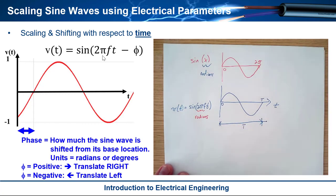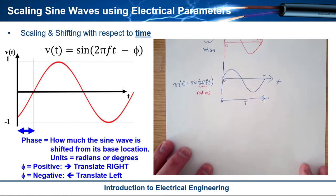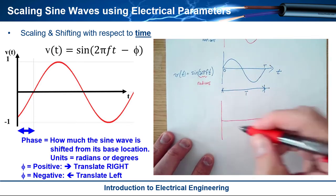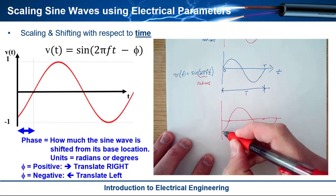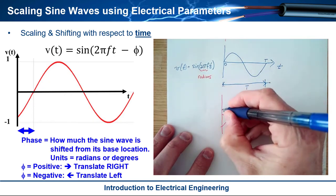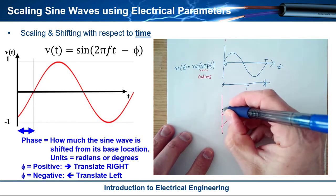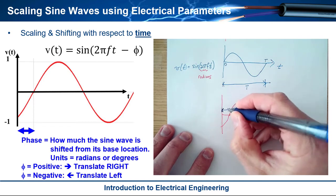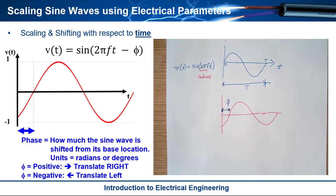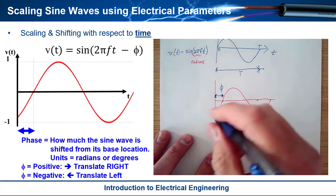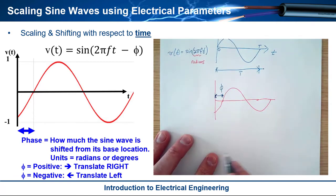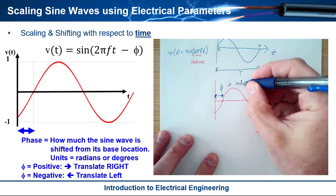Now we're talking about a phase shift, which is simply where you translate the sine wave left or right. Your sine wave might not cross at the origin — it might cross a little bit shifted to the right or left. This phase shift is called phi, and you specify the phase shift within the sine function in radians.